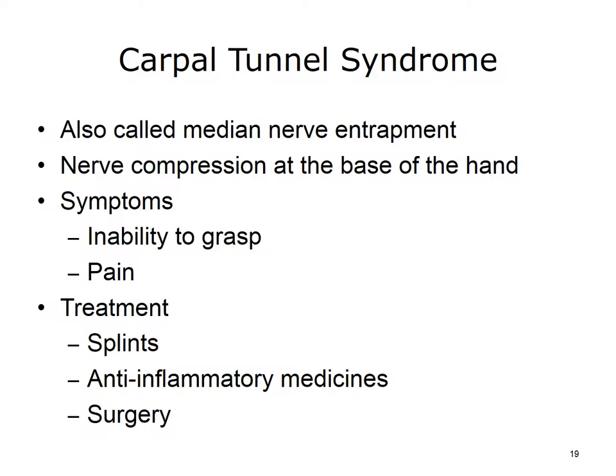The carpal tunnel is a narrow passageway of ligaments and bones at the base of your hand. It contains nerves and tendons. Sometimes the thickening of the tendon or swelling in the area narrows the tunnel and causes nerve compression. Symptoms include inability to grasp objects and sharp pain through the wrist and up the arm. Causes vary, but some are work-related. Women are three times more likely to have it. Treatment includes resting your hand, splints, anti-inflammatory medications, and surgery.